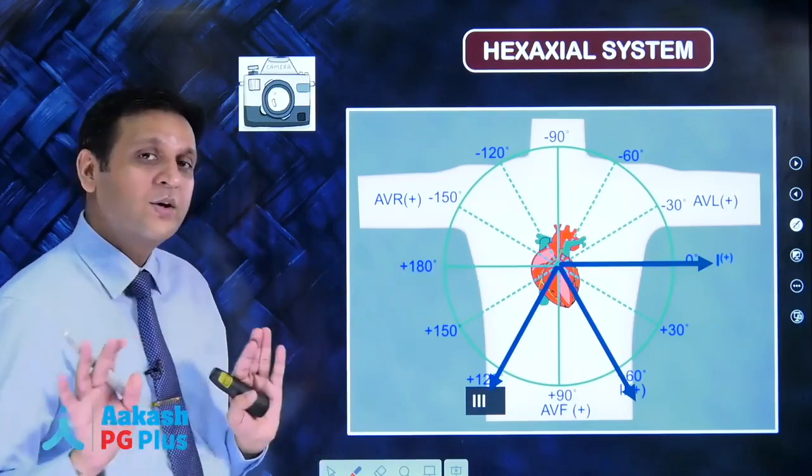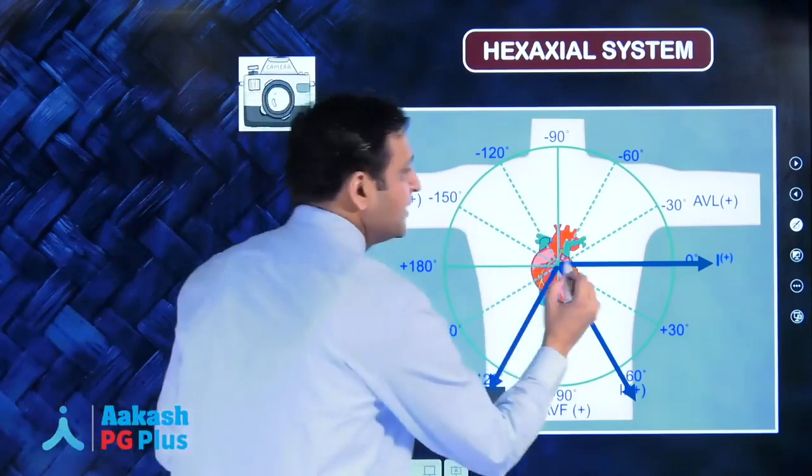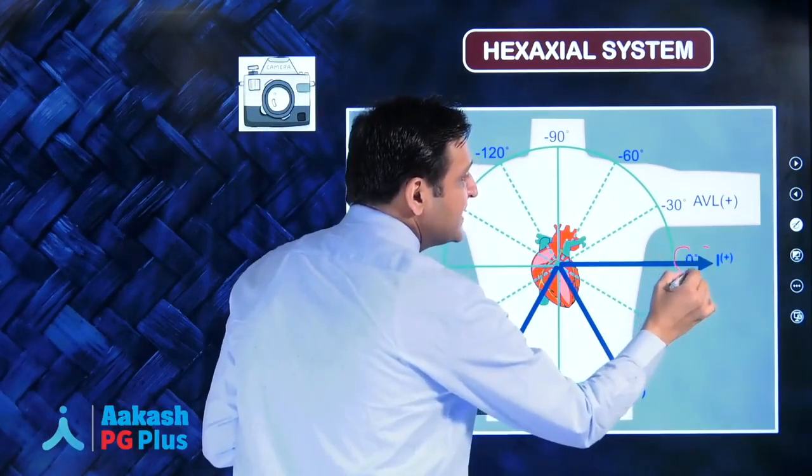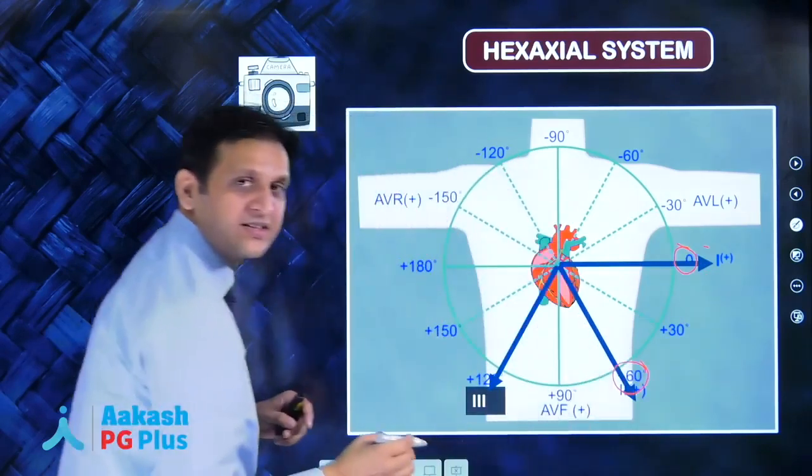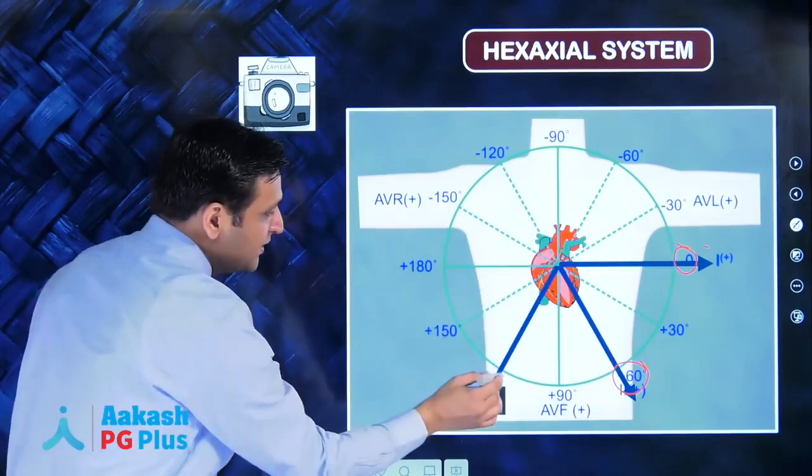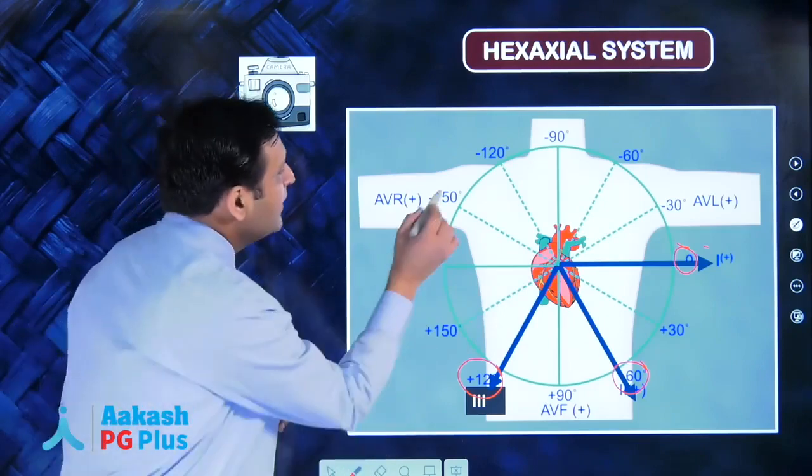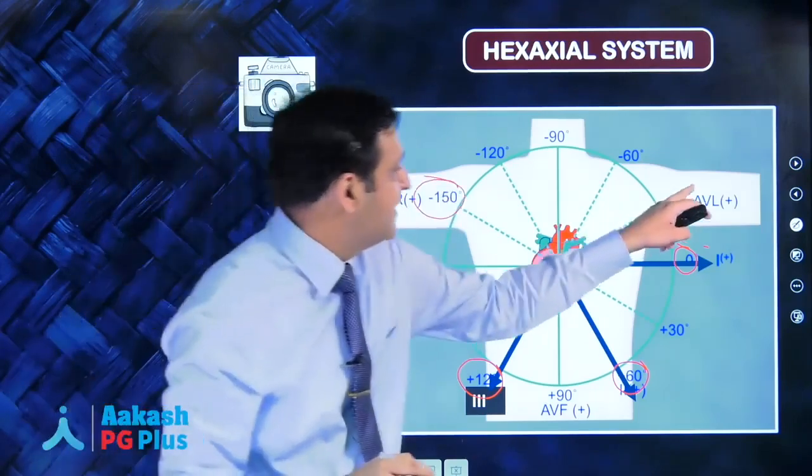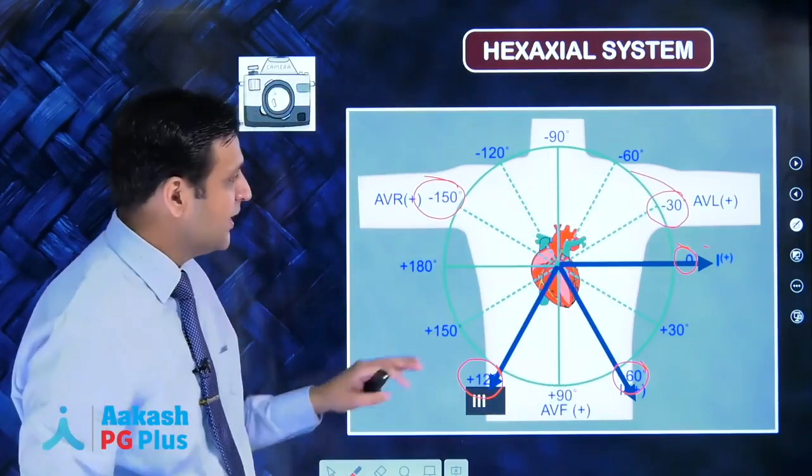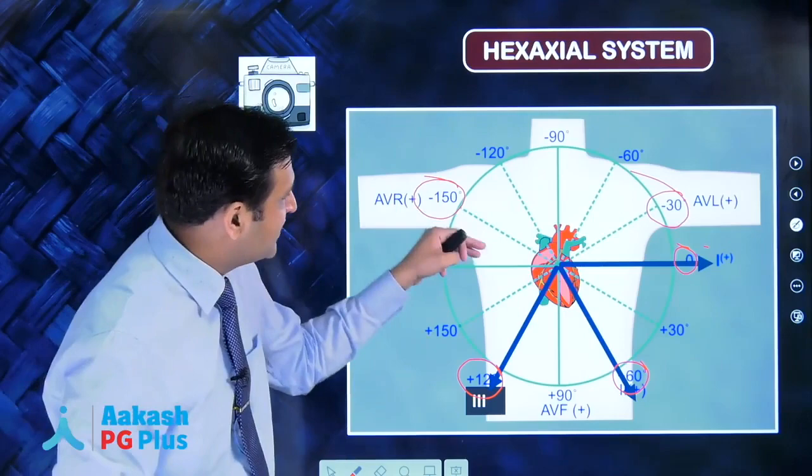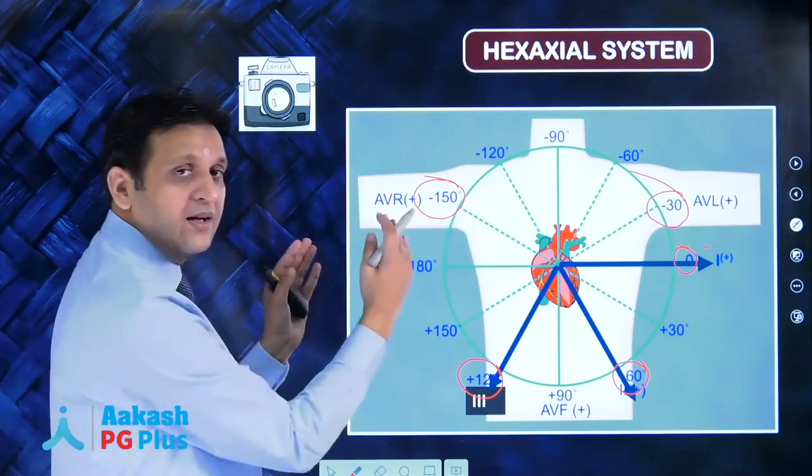These are the vectors. Lead one is at zero degrees, lead two at 60 degrees, lead three at 120 degrees. AVR looks at the heart from minus 150 degree angle, AVL from minus 30 degree angle. Because these are vectors looking at the heart at different angles, we can make a hexaxial system.